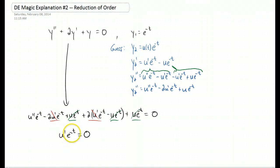Obviously, e to the t is not going to equal zero, so we can just cancel that out. And you have u double prime equals zero. u double prime means two derivatives with respect to t.